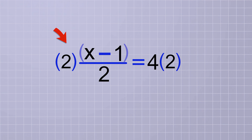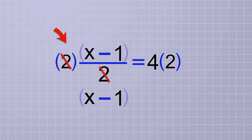On the first side, the 2's cancel out, leaving just our implied group x minus 1 on that side. And on the other side, we have 4 times 2, which is 8.